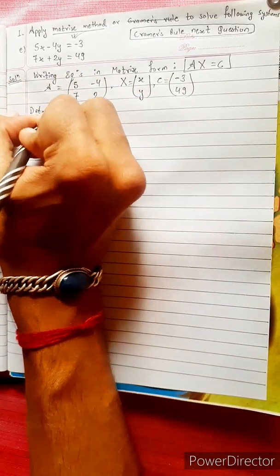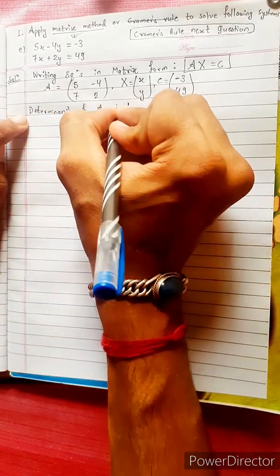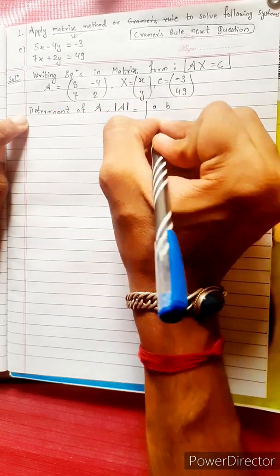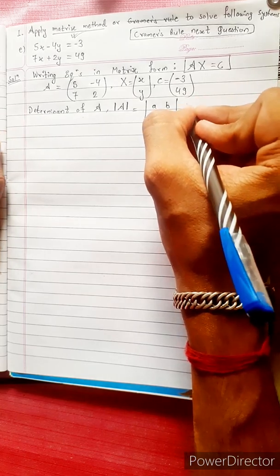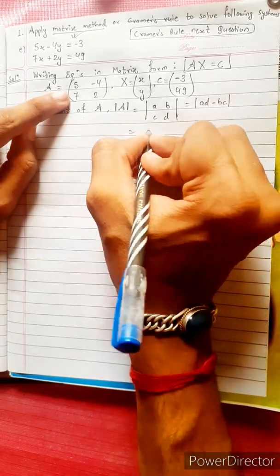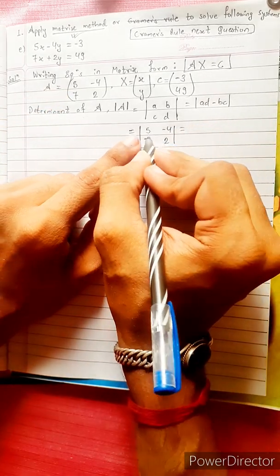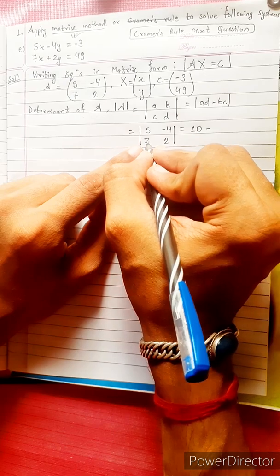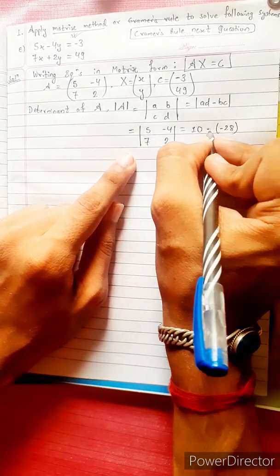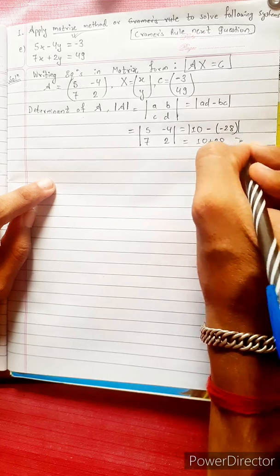Now, the determinant of A. The formula is: determinant of A equals AD minus BC. A equals [5, -4; 7, 2]. AD is 5 times 2 equals 10, minus BC which is (-4) times 7 equals -28, so 10 minus -28 gives 10 plus 28, which equals 38.